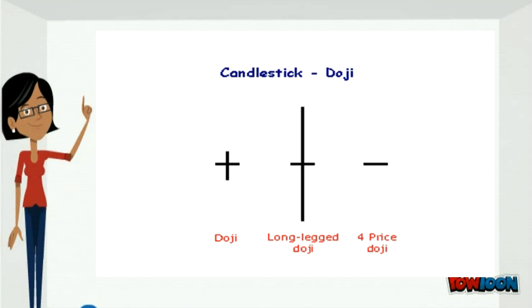Long-legged Doji: When they occur after small candlesticks, they indicate a surge in volatility and warn of a potential trend change.